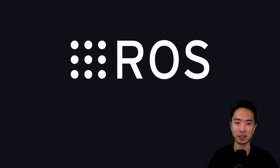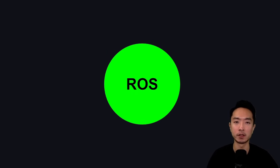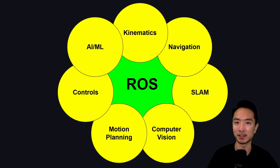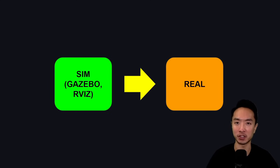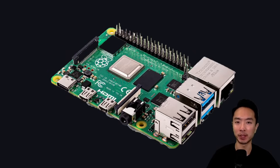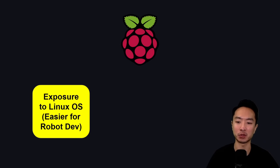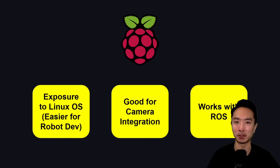This is why I recommend using ROS for your projects. ROS stands for Robot Operating System — it's not actually an operating system, but a framework for robotics. What's nice about ROS is that it integrates all of these concepts and makes them really easy to use. When you create your robot in simulation like Gazebo or Arviz, you can directly transfer it to real hardware with very little changes. For hardware, I highly recommend the Raspberry Pi — it gives you exposure to the Linux operating system, is good for camera integration, and works with ROS.